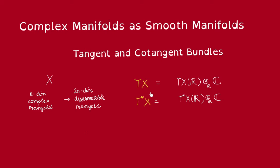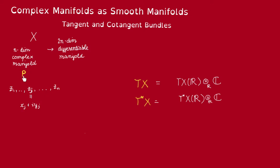Let's find some local basis for them. Let's say that at a point P, we have local coordinates z1 through zn, where the real component of zj is xj and the imaginary component is yj. Then x1 through xn, y1 through yn gives real local coordinates for P when we view X as a smooth manifold.